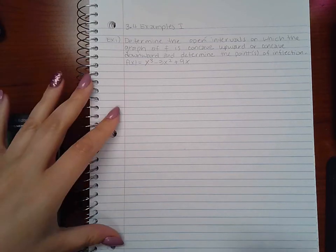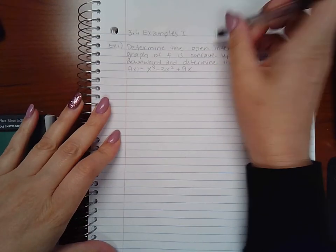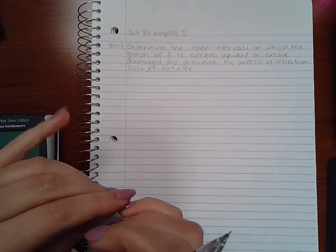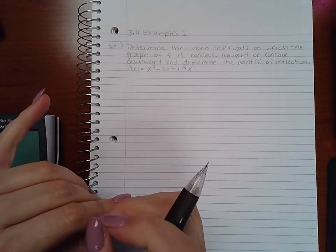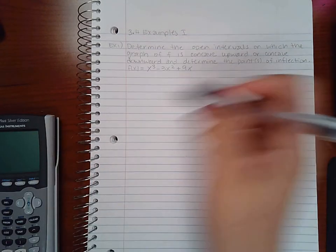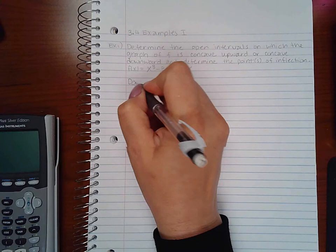This video is going to be concavity examples part one. In this example it says determine the open intervals on which the graph of F is concave upward or concave downward and determine the points of inflection. So here's my function. In order for me to do this I would have to know the domain of my function.